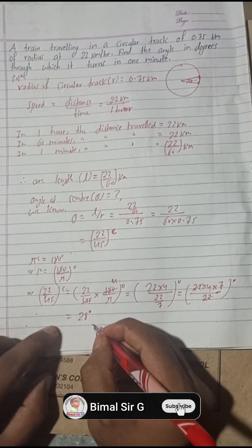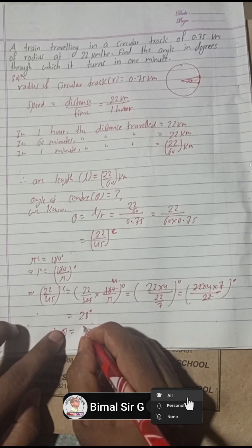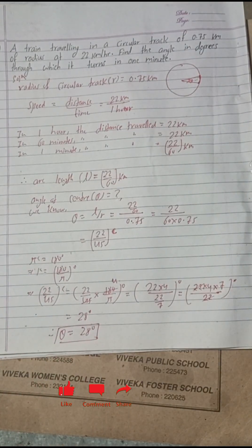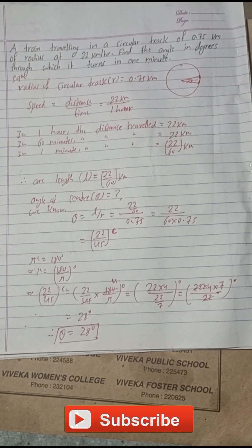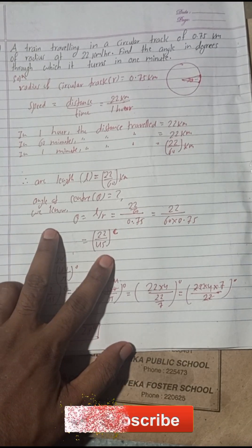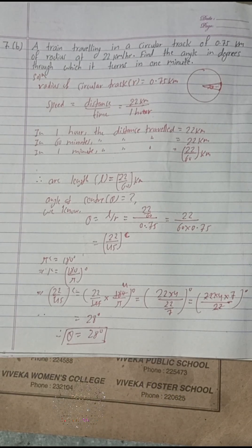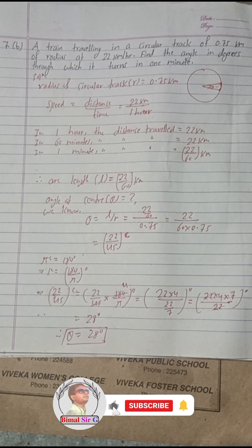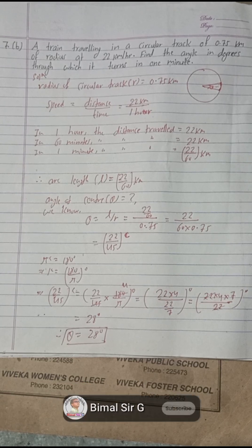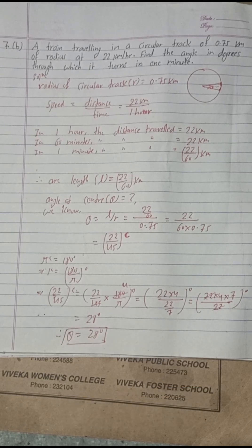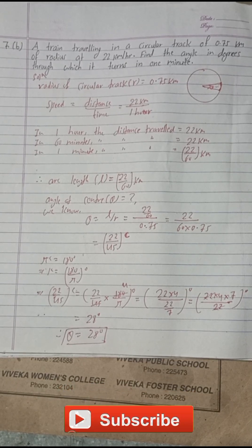Therefore, theta is equal to 28 degrees — this is the required answer. Hope you understood this solution. If you have any doubts in any steps, please feel free to comment in the comment box and I will try my best to reply. On this YouTube channel you can find many video solutions for Classes 6 through 12. If you find it useful, please share with your friends.